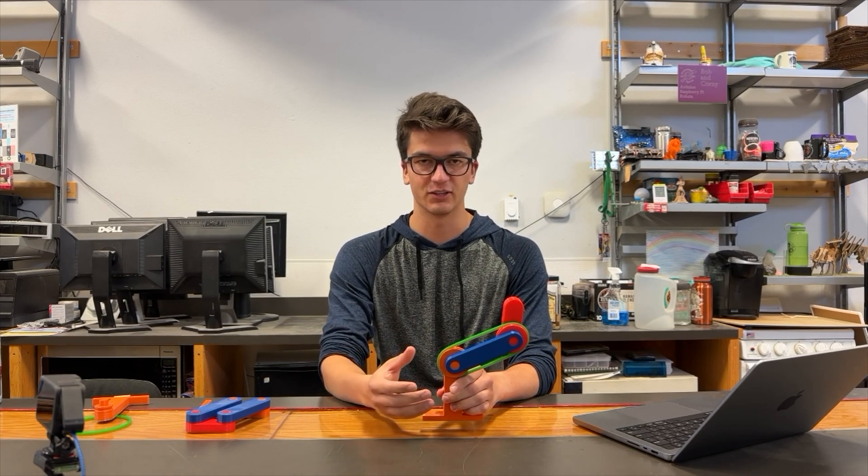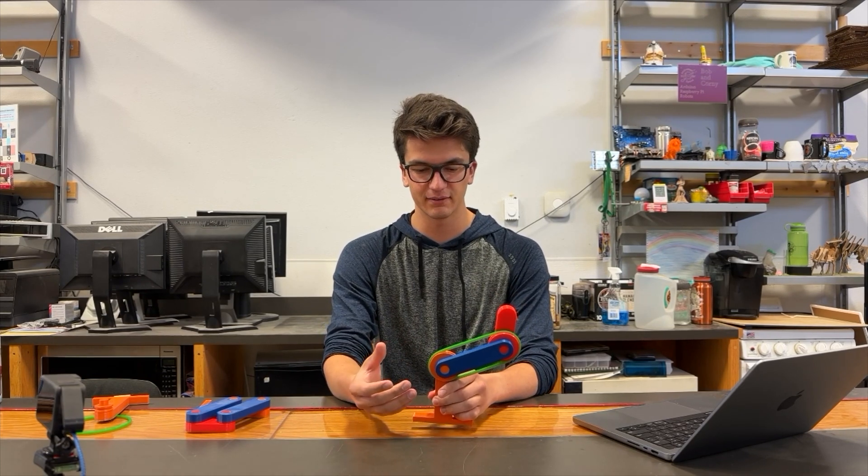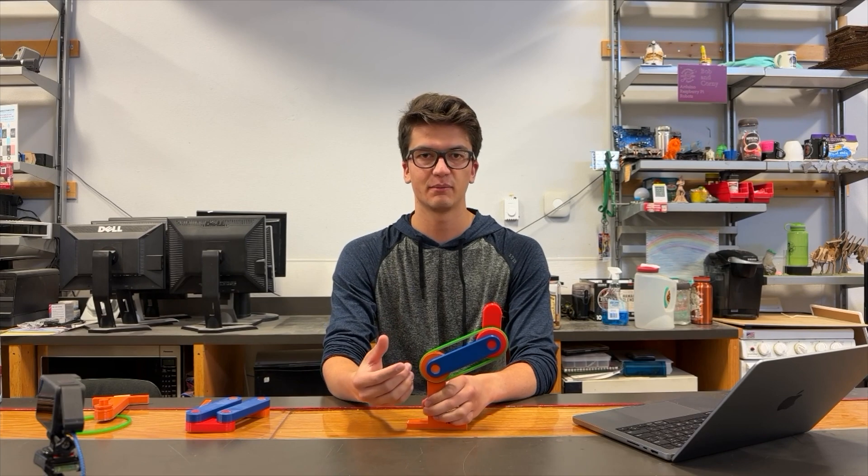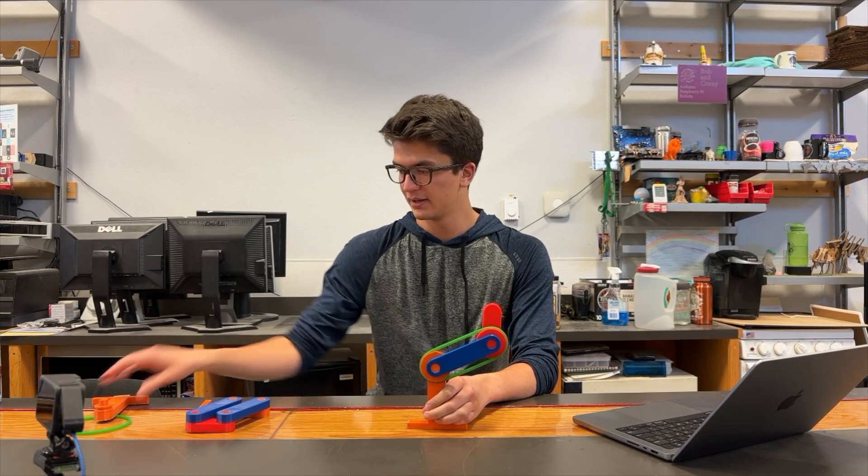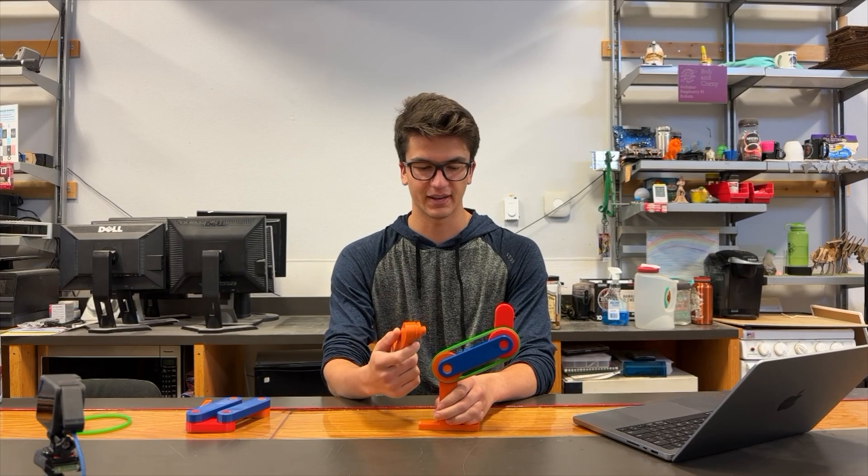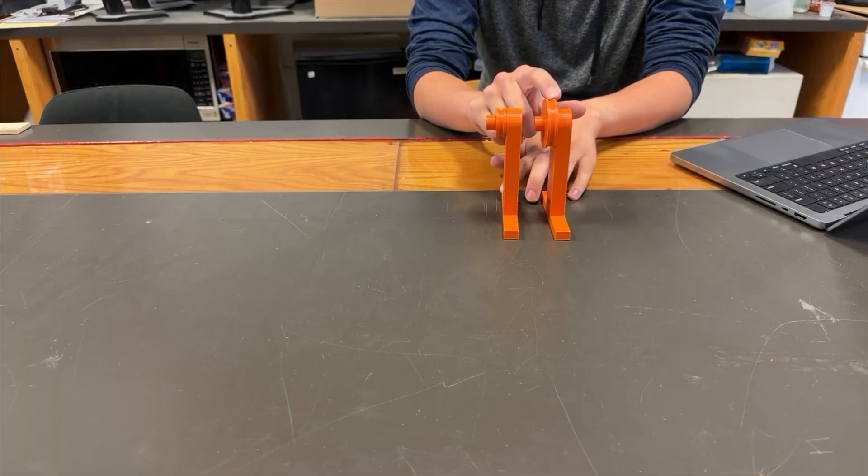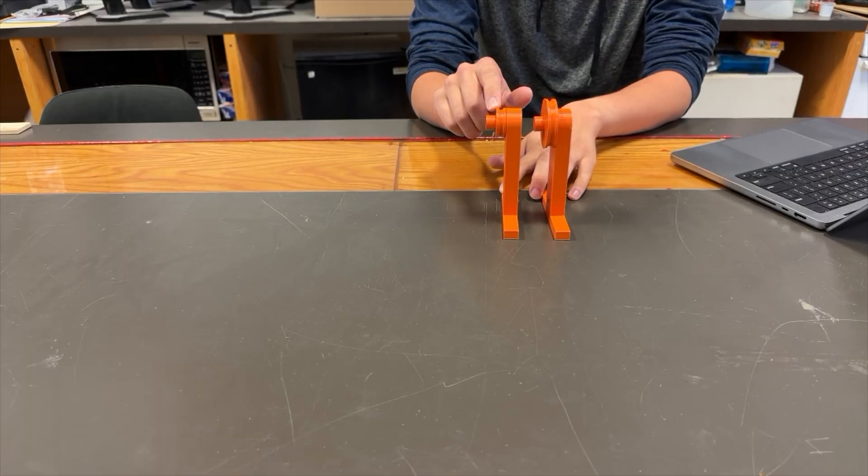And so there's a modification that isn't commonly done for these linkages, but I think it'd be very useful for this season. And that's changing the pulley diameter on just one side. So you'll notice, compared to the original one, this pulley is about half the diameter.